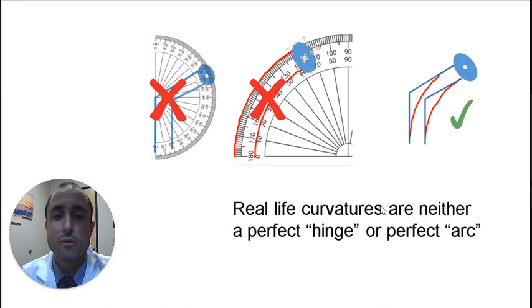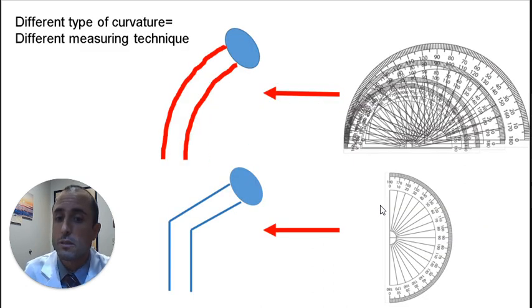In real life, however, penis curvature is likely neither a hinge nor an arc, but something in between. Some penises might come closer to a hinge and others to an arc. The same method of measurement will not work for both of these. A single protractor works perfect for the hinge one, but the arc one requires many protractors.